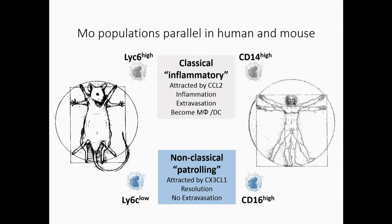So moving on, why am I interested in monocytes and cancer? Well, the image that Joe Gray showed us on Monday really nicely showed the milieu of immune cells that form around these tumors in every solid tumor environment. So not just in breast, but also pancreatic or particularly melanoma, but also colon cancer and many others.